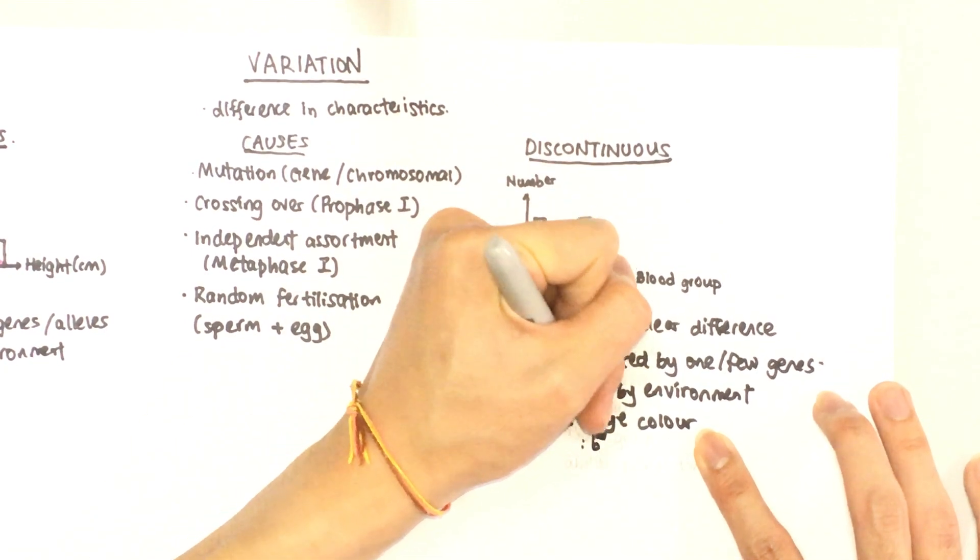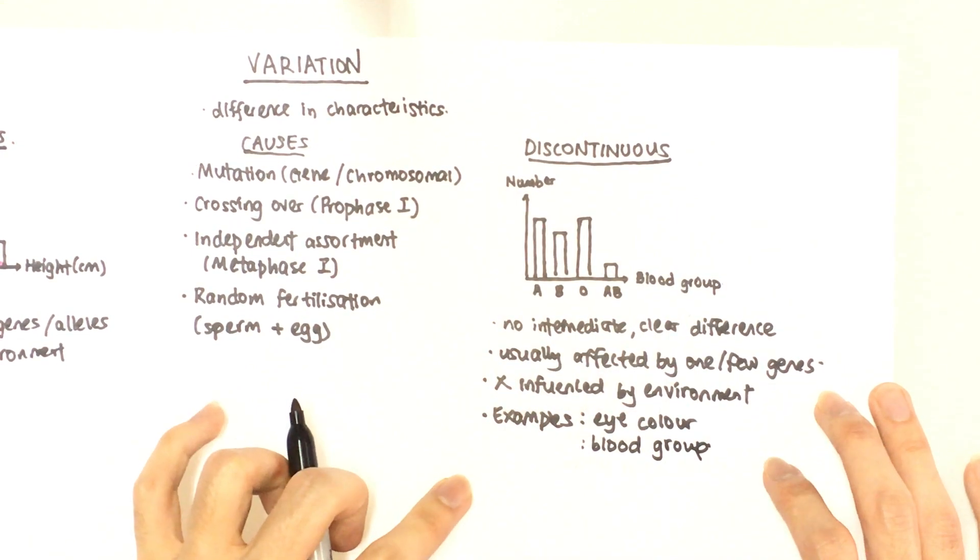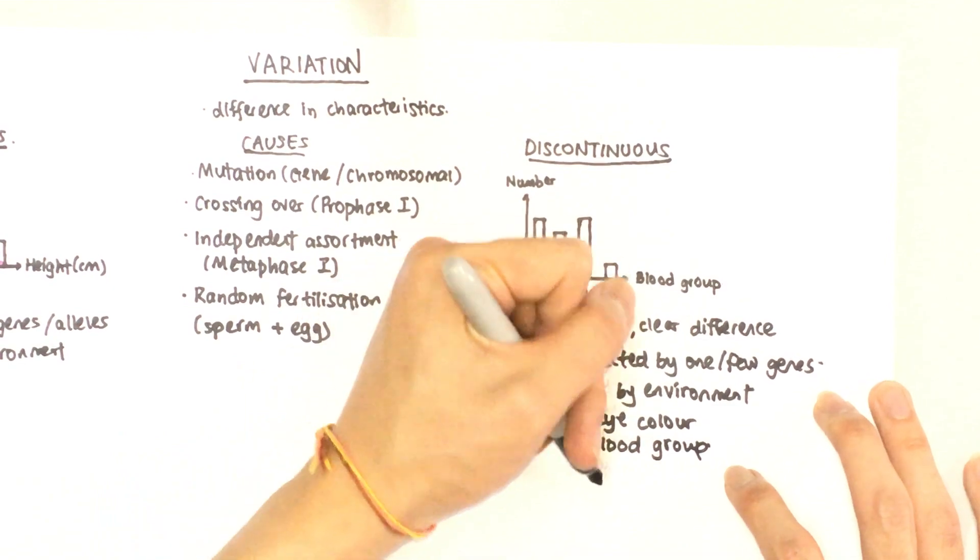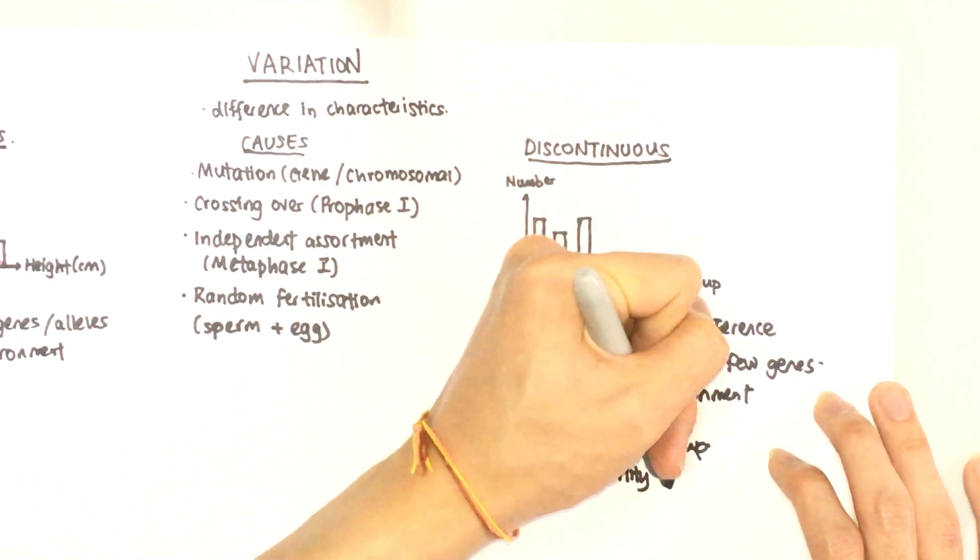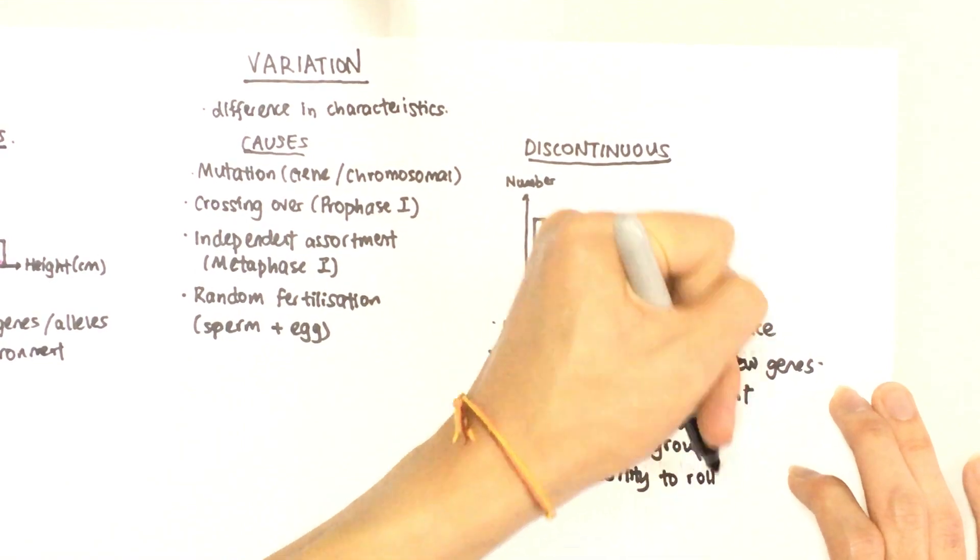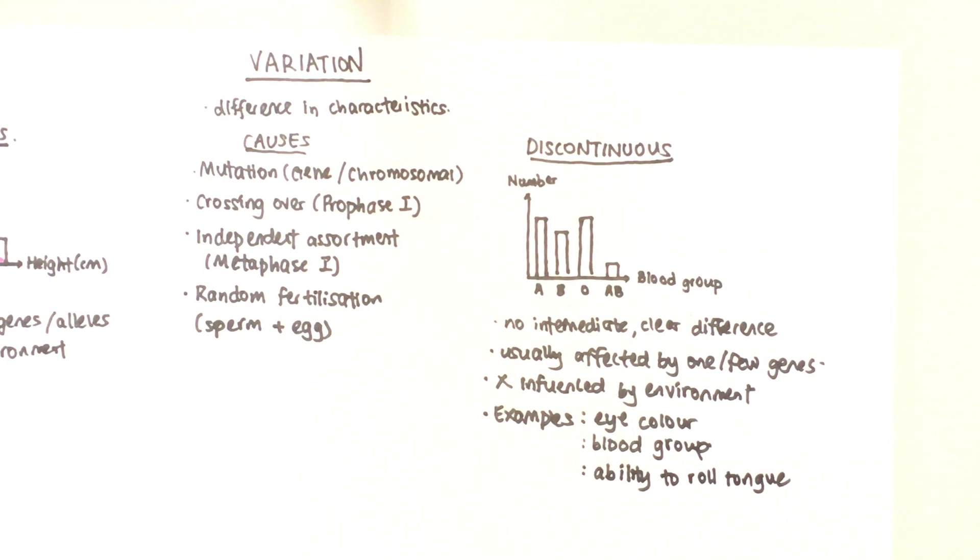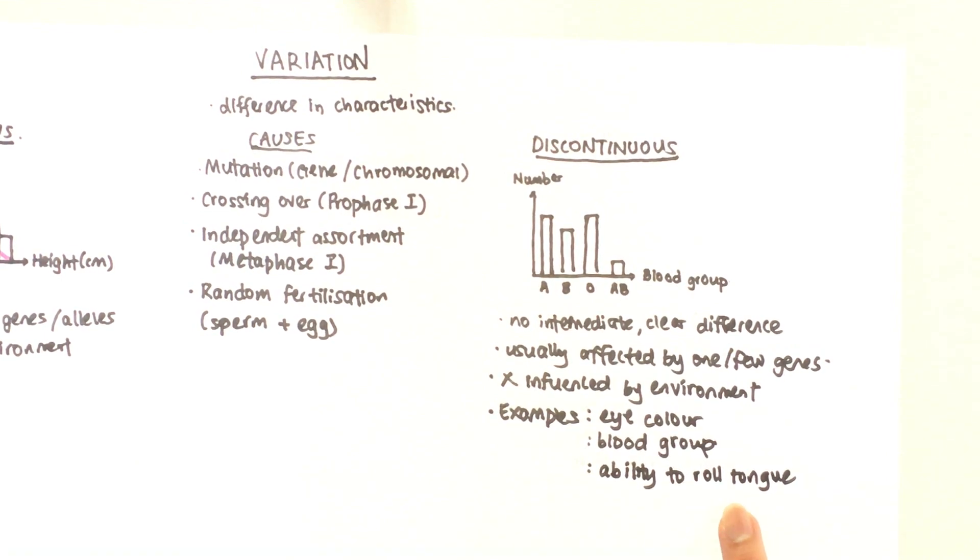The next one is blood group. Your blood group will never change, no matter what you do. And last but not least, the ability to roll your tongue. A lot of people I know actually have the ability, but some of them don't. This is an example of discontinuous variation because, like I said, there's no intermediate. There's no, you can roll your tongue halfway.